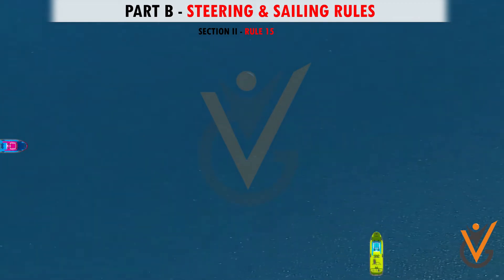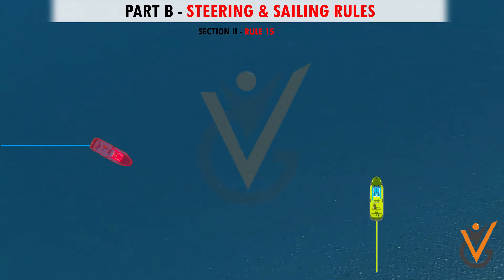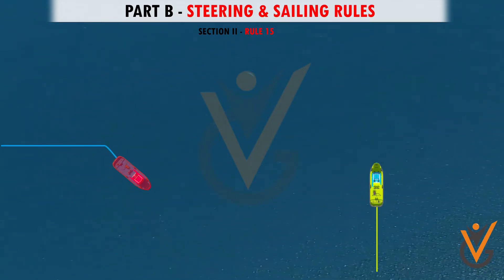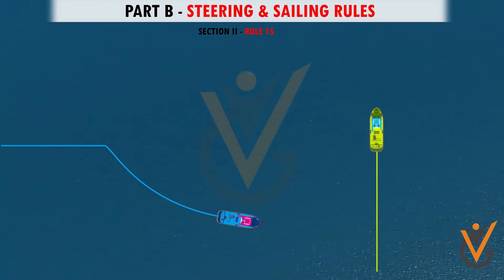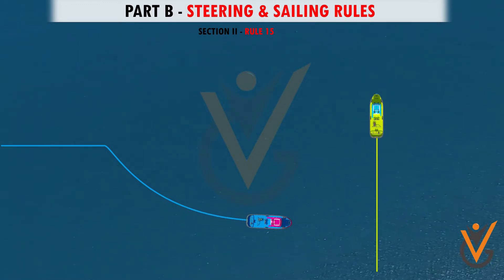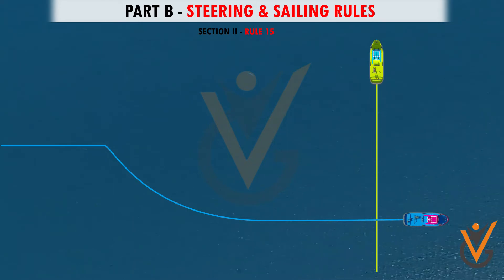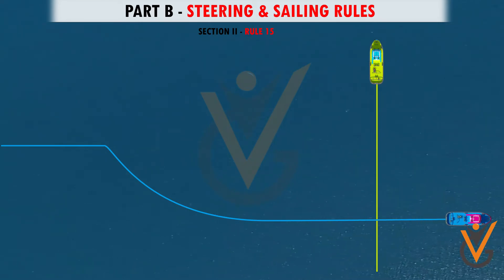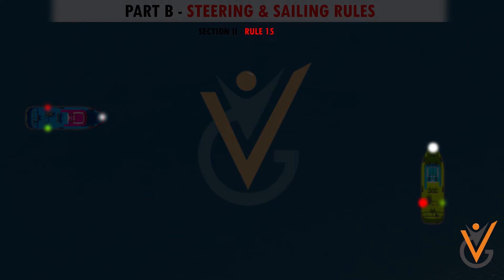Rule 15: When two power-driven vessels are crossing, the vessel which has the other on her own starboard side should alter course to starboard, or slow down her speed, or both, in order to allow the other vessel to safely cross. At night, this means that you are seeing the mast headlights and the red side light.